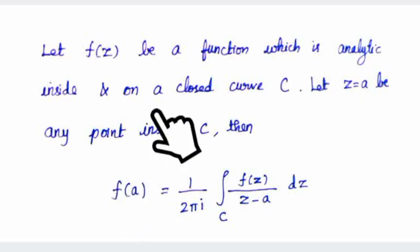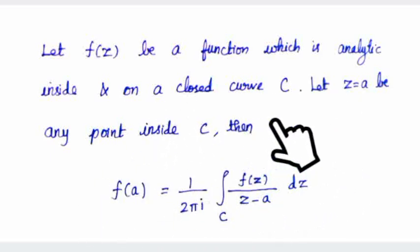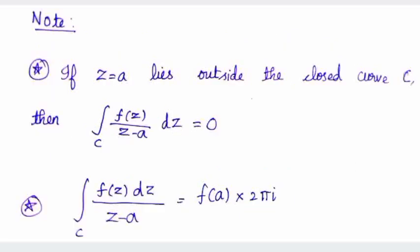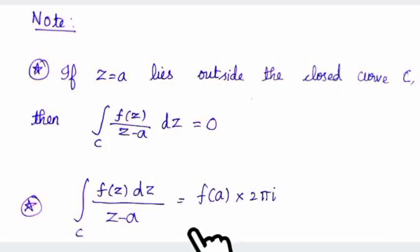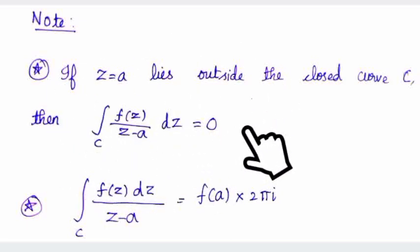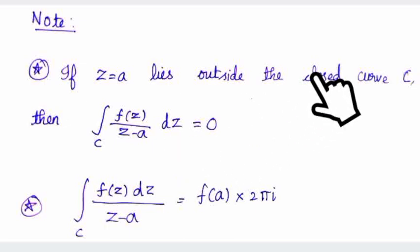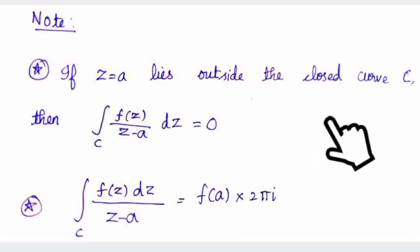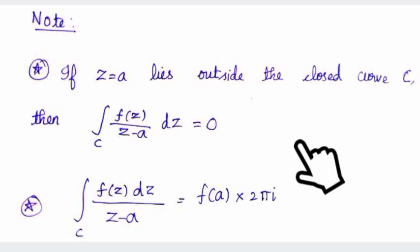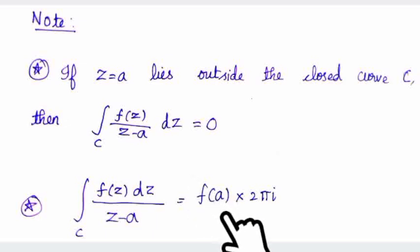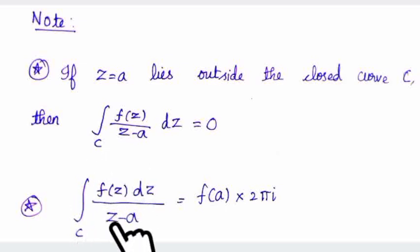Let's check the integral formula directly and start solving problems. One important point: if the point is outside the closed curve, the value of the integral is zero. So, for a given problem, the key step is to check whether the point is inside or outside the curve. We know that f(a) = 1/(2πi) · ∮_C f(z)/(z − a) dz.